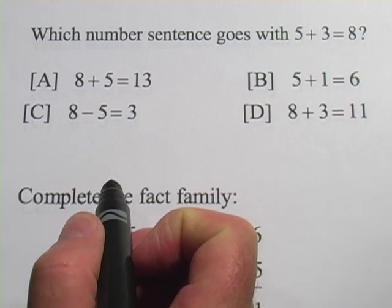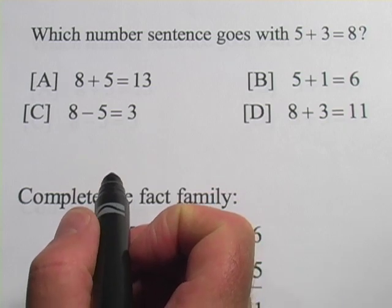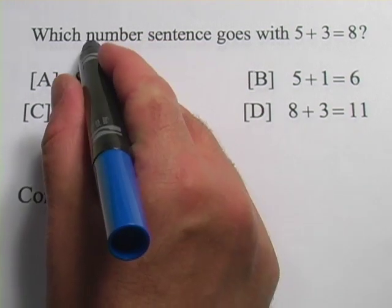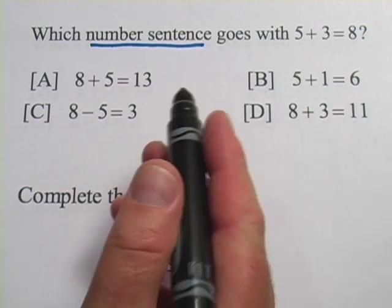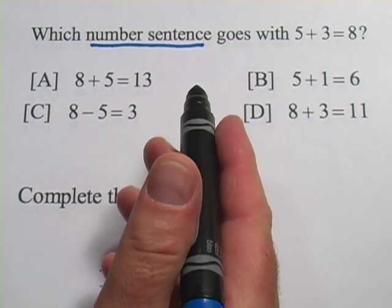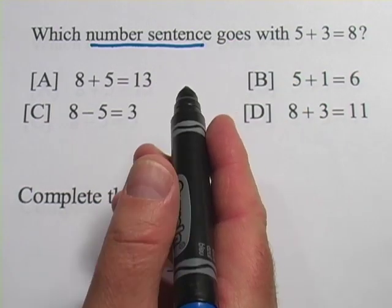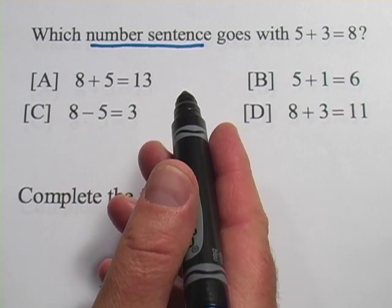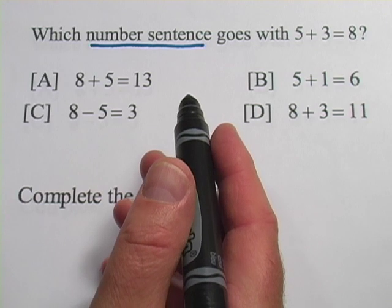In these problems we've got some concepts or ideas that maybe you haven't heard before. We're talking about number sentences and fact families. A number sentence is just what you say when you say out a mathematical problem like 2 plus 2 equals 4, that's a number sentence. 5 minus 3 equals 2, that's a number sentence.